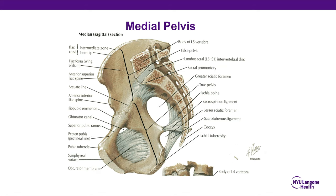This is the view into the pelvis. You can see the false pelvis above the pelvic brim, and the true pelvis below it. The false and true pelvis are separated by the iliopectineal fascia. You can see the course of the sacrotuberous ligament and the sacrospinous ligament and their alignment in regards to the pelvis — one is more vertical, the other more transverse — which is very relevant for stability of the pelvic ring.